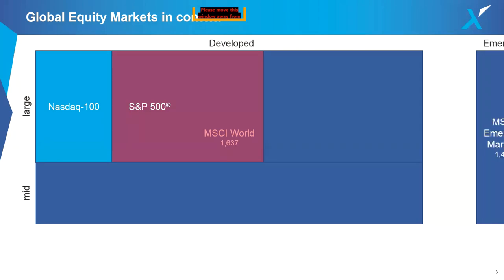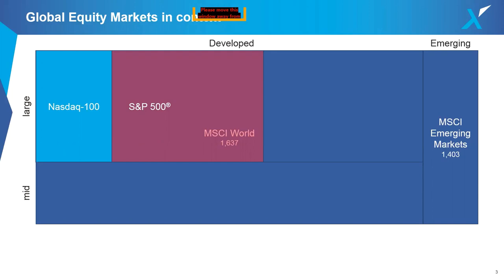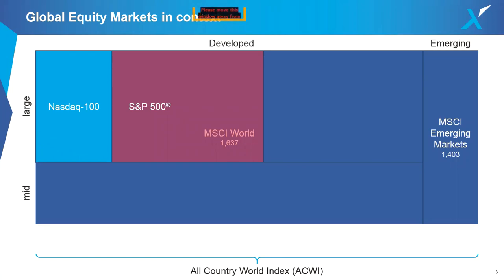Broadening out beyond developed markets, we move into the emerging market space. Within MSCI Emerging Markets there are about 1,400 companies — almost as many as across developed markets. However, emerging markets only make up about 11 to 12% of the total market cap across developed and emerging combined, so those companies are much smaller. When you combine developed and emerging markets in MSCI terminology, you get the All Country World Index, or ACWI.